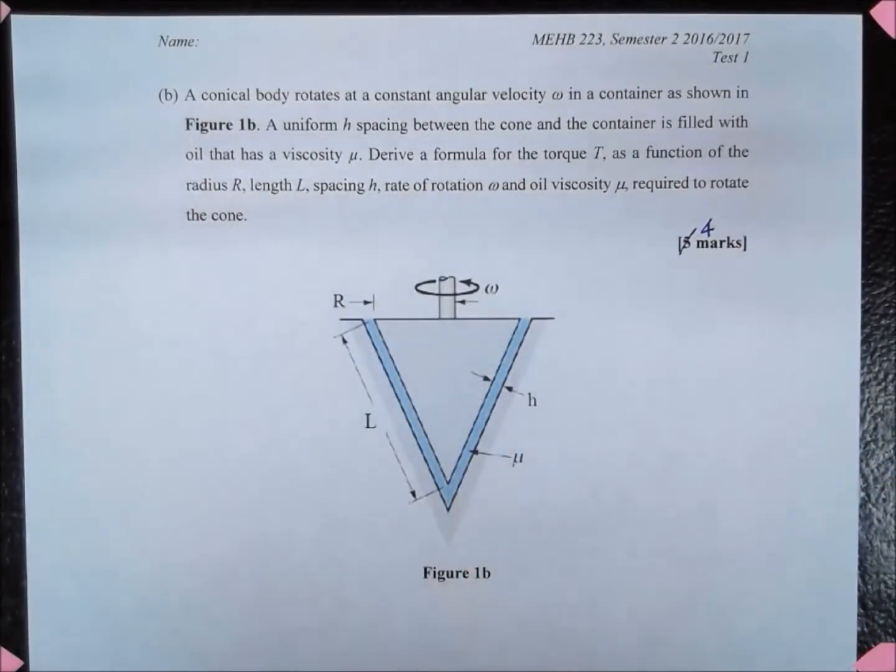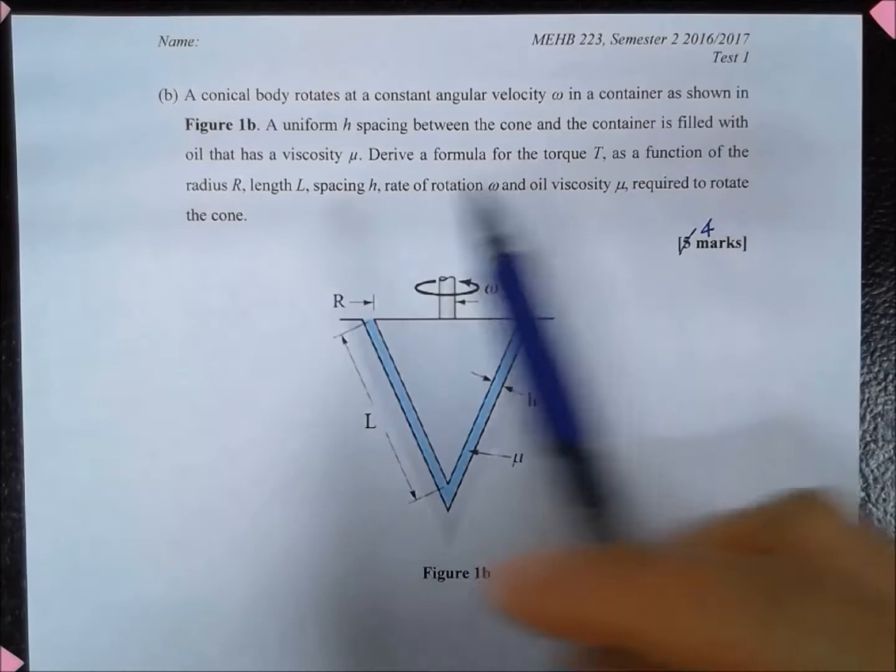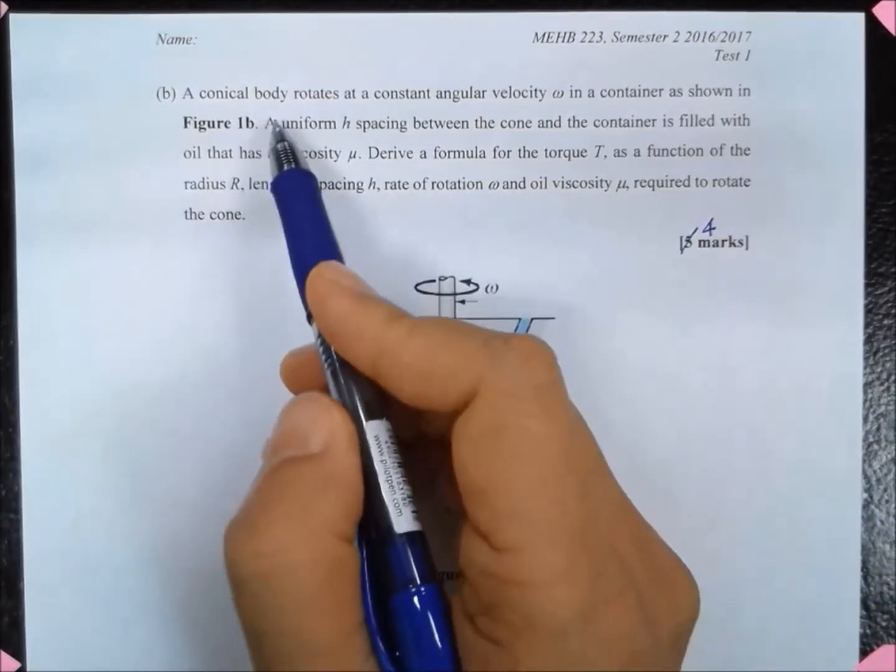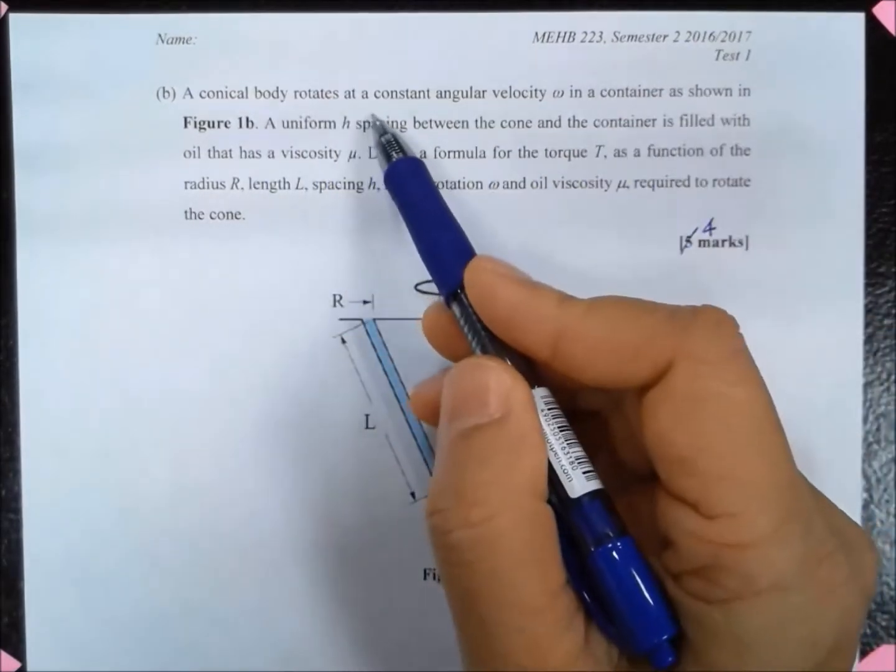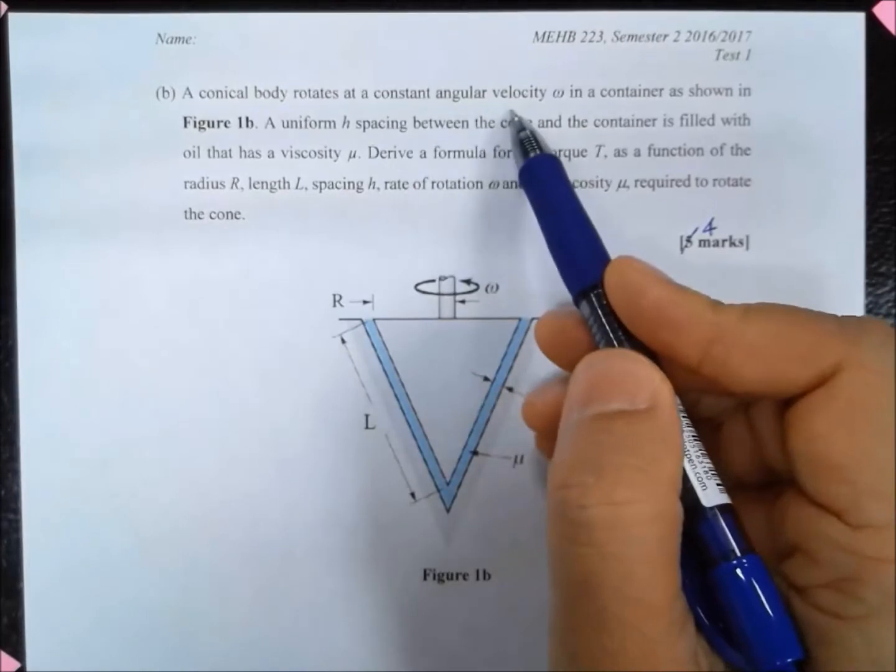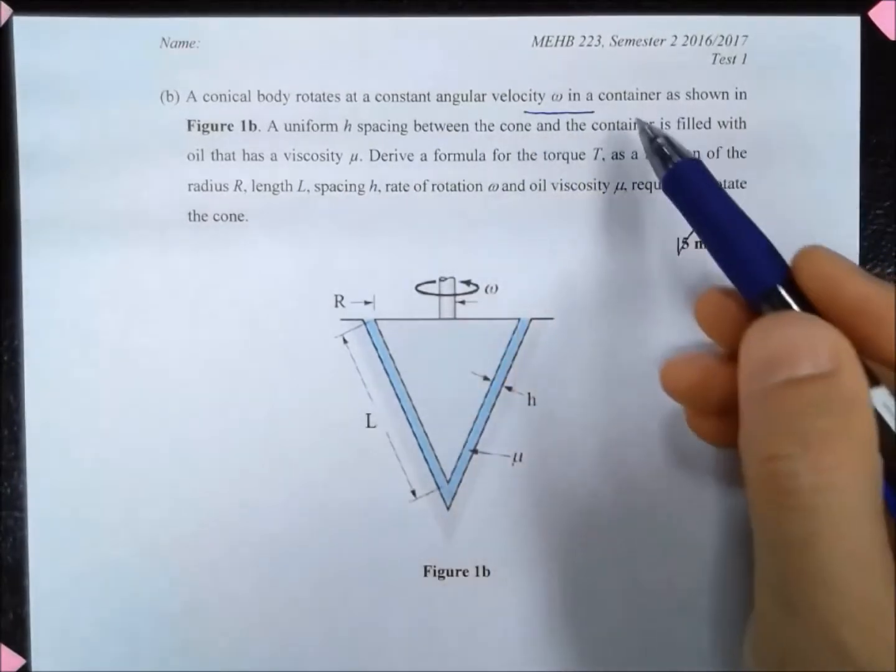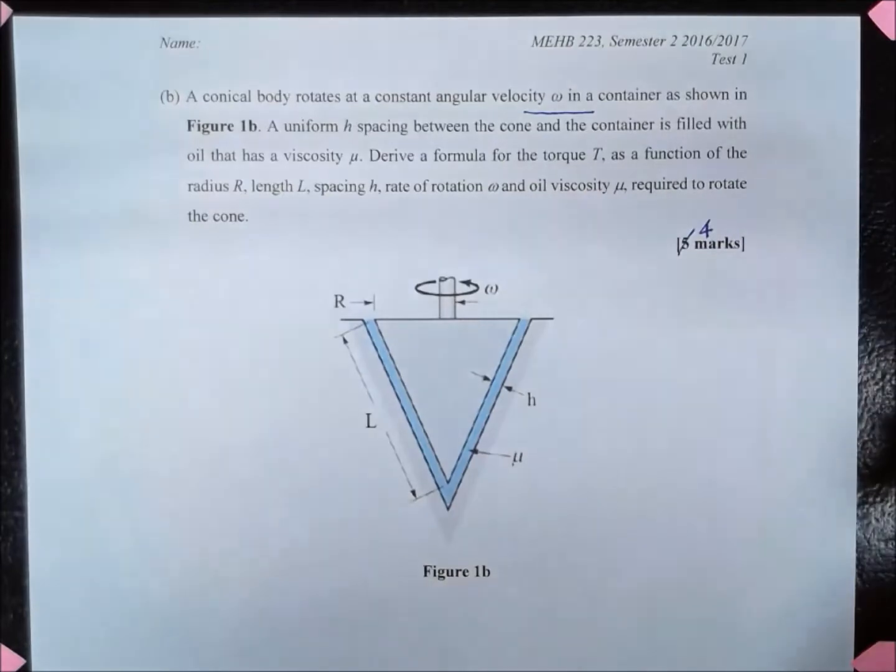Bismillahirrahmanirrahim. So this question is related to shear stress in moving fluids. Here we have a conical body that rotates at a constant angular velocity omega in a container as shown in the figure.